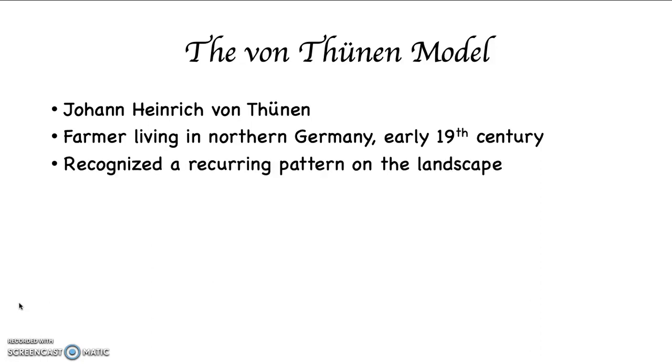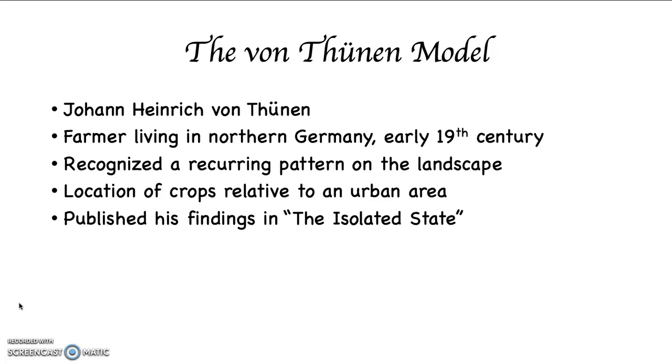And he recognized a recurring pattern on the landscape. So as he moved around on that landscape in northern Germany, he saw that there was this recurring pattern with regard to agriculture. This had to do with the location of crops relative to an urban area. Now whether that was a city, a town, or a village didn't really matter. He noticed the same thing recurring on the landscape. And he published his findings in a text that he called The Isolated State.